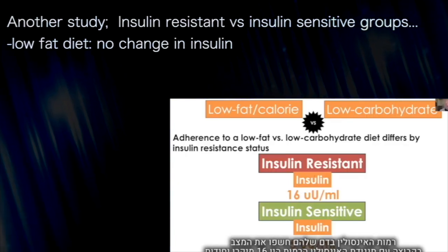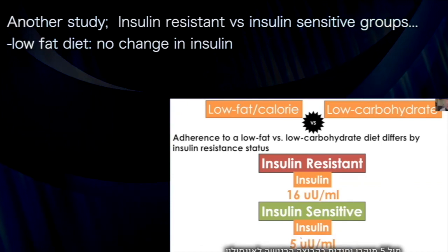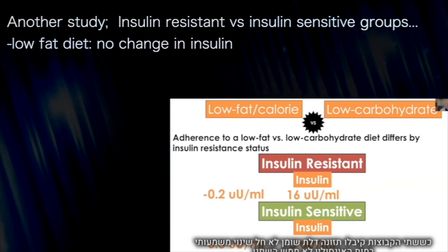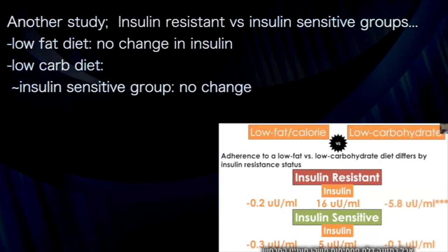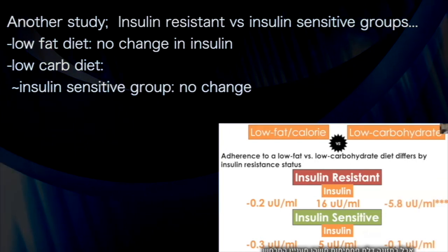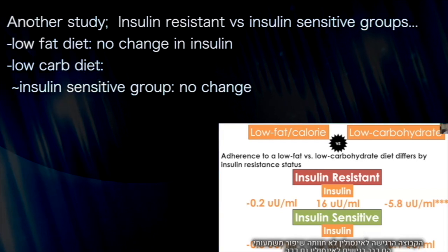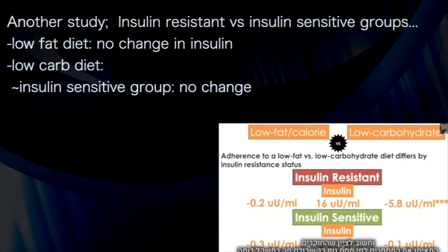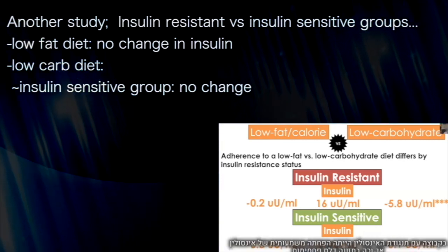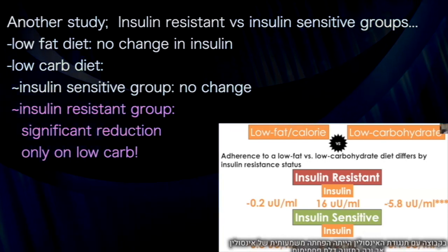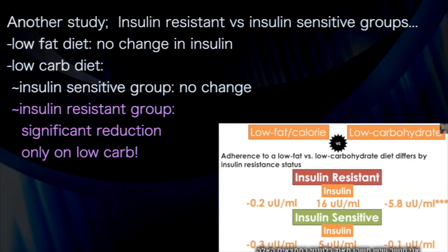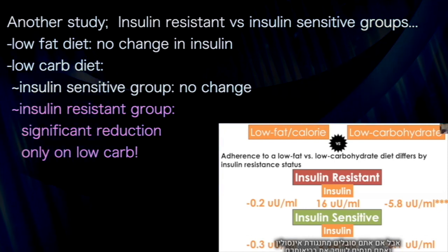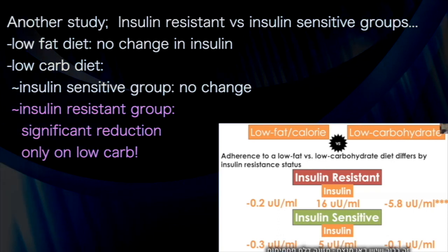Insulin in the insulin-resistant group was 16 micro-units, and 5 in the insulin-sensitive group. When both groups were put on a low-fat diet, there was insignificant change — insulin didn't really go anywhere. On the low-carbohydrate diet, the insulin-sensitive group didn't really experience any benefit — they're already insulin-sensitive. However, the insulin-resistant group had a significant reduction in insulin on a low-carbohydrate diet. If you're insulin-resistant and trying to improve metabolic health, clearly there's a winner: the low-carbohydrate diet.